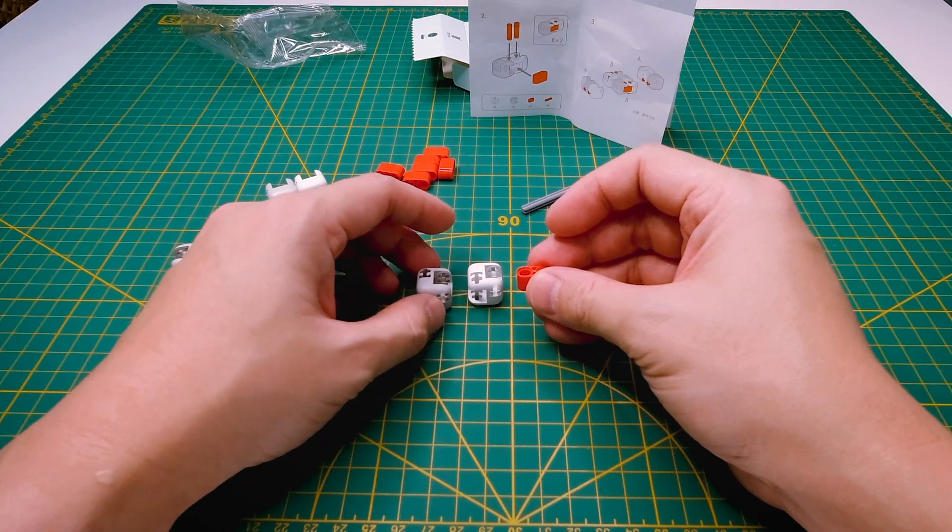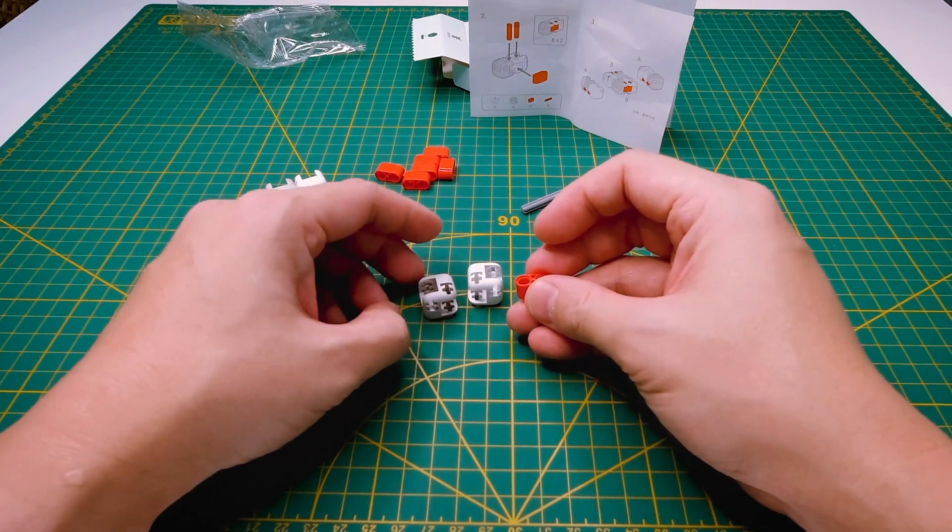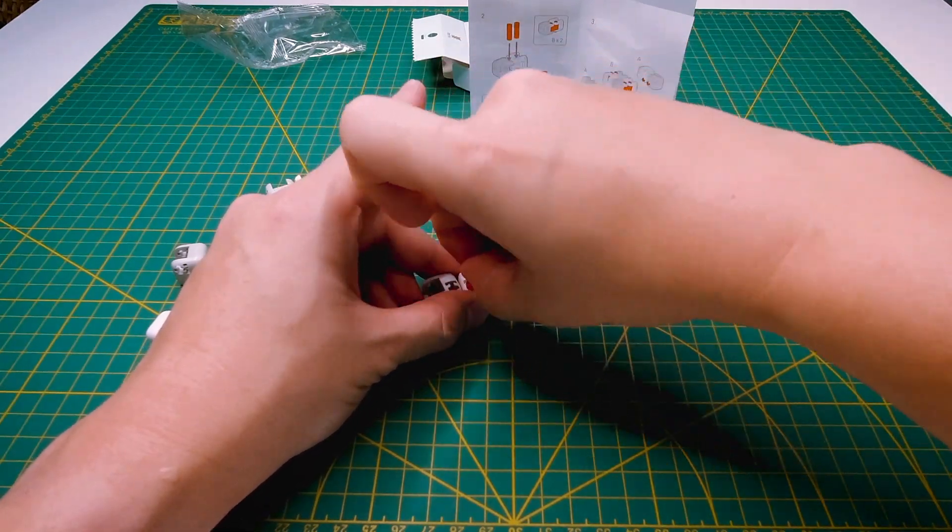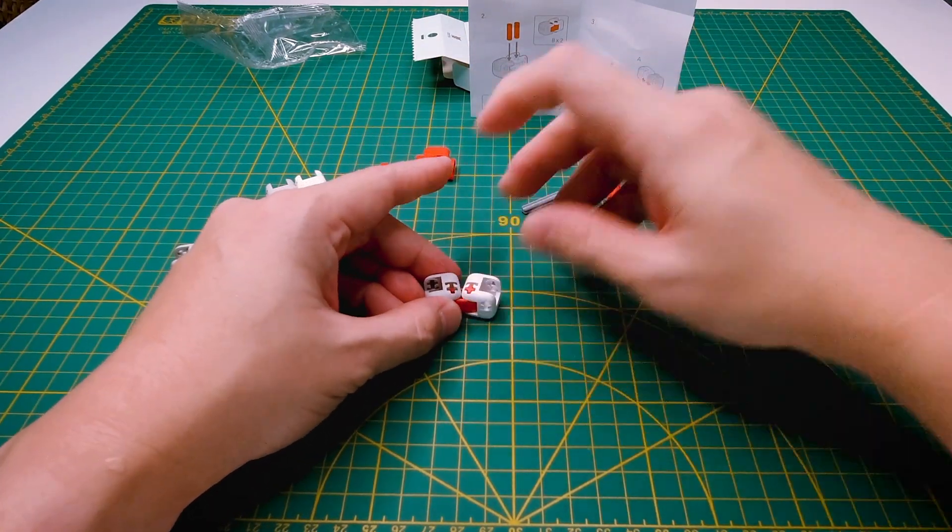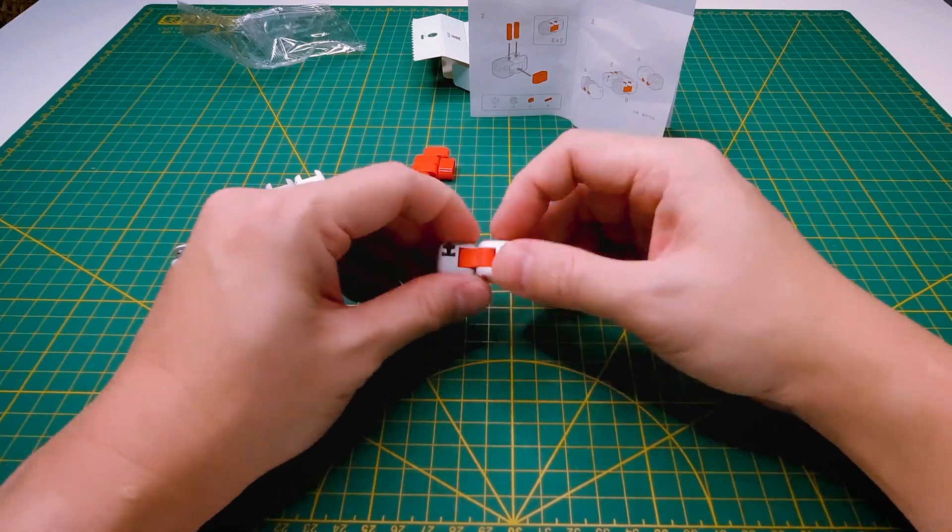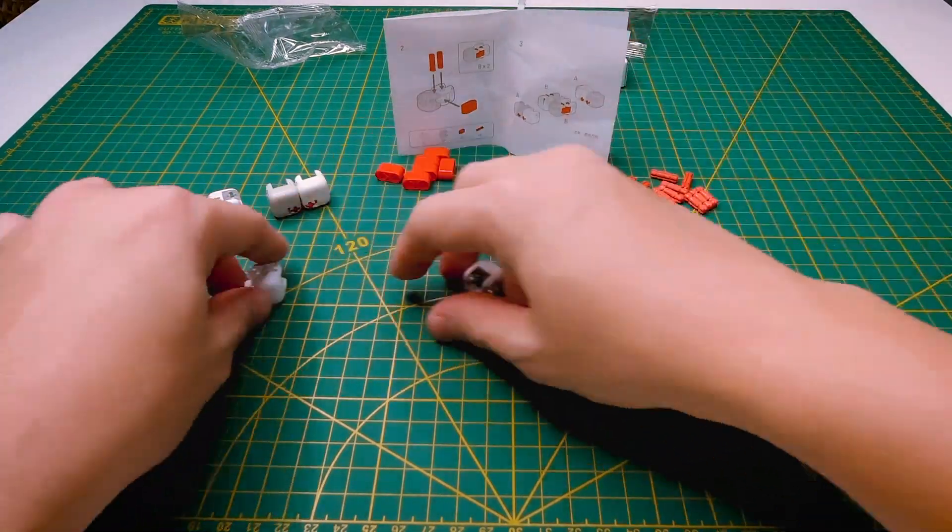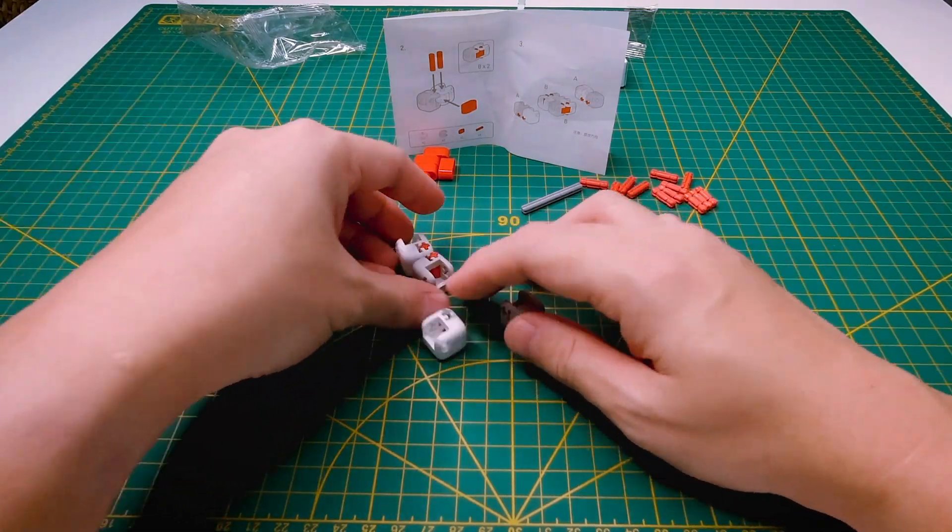The Mitu fidget building block is compact and delicate. The building blocks adopt zero-drop technology. And the mold accuracy is up to 0.005 millimeters.